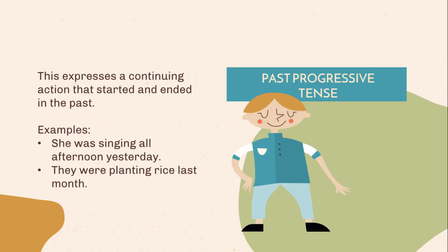Past progressive tense. This expresses a continuing action that started and ended in the past. Examples: She was singing all afternoon yesterday. They were planting rice last month.